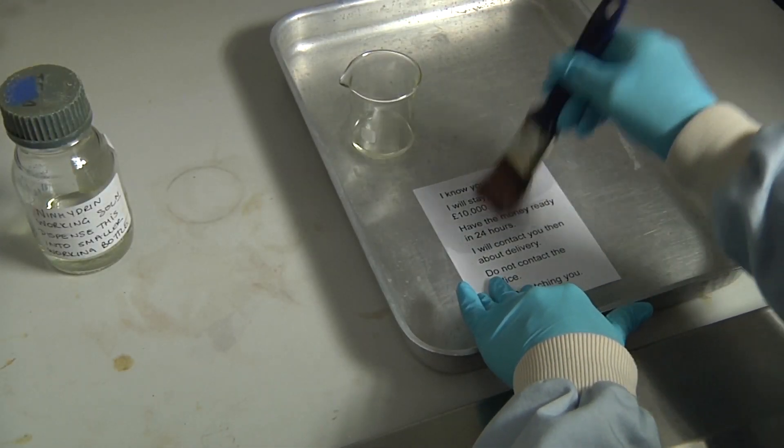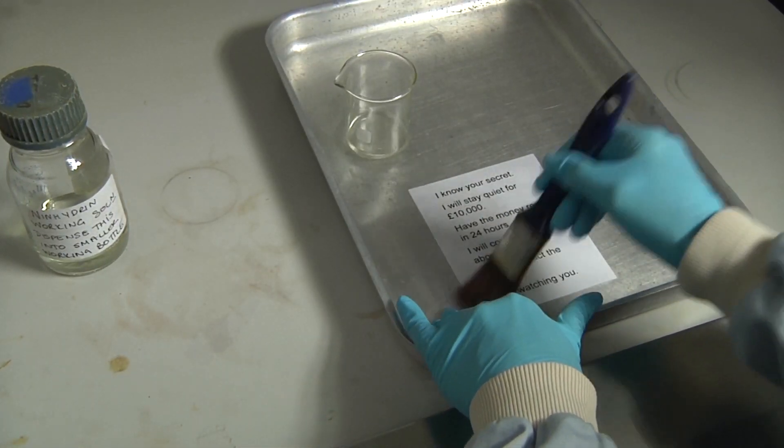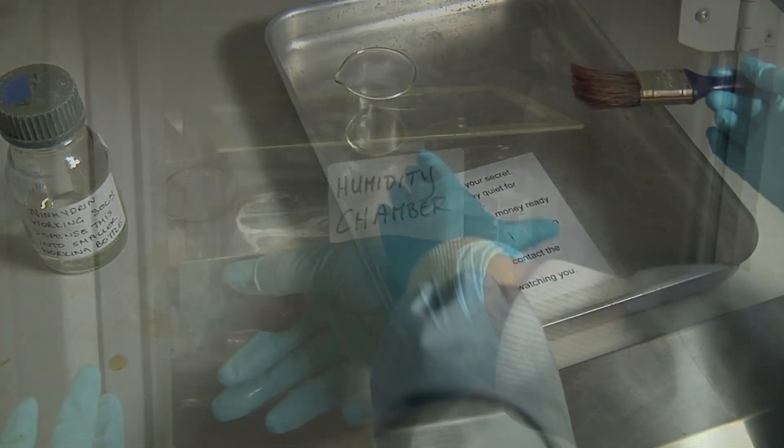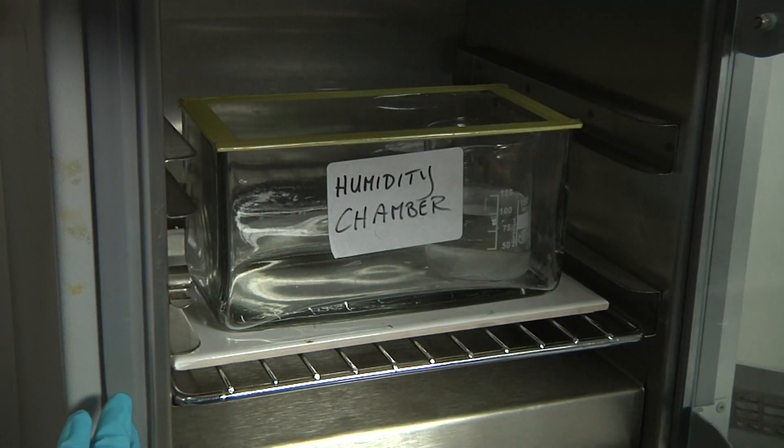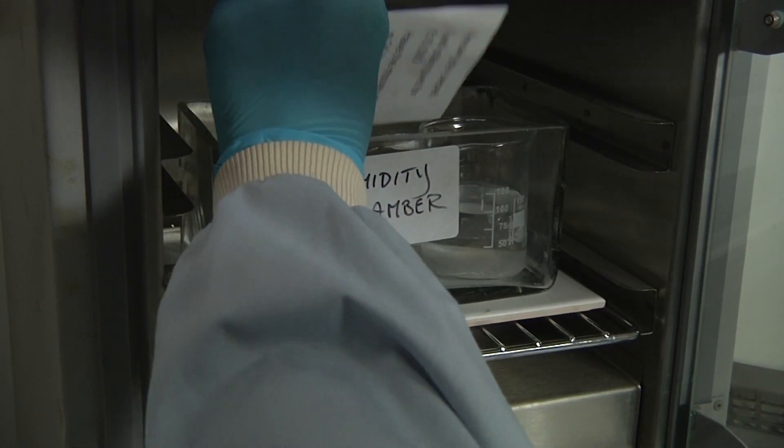Ninhydrin is a chemical solution which is used to enhance finger marks on porous surfaces such as paper and cardboard. The surface is washed with the solution and left to dry before being placed into a 70 degree centigrade humid oven for 15 minutes.